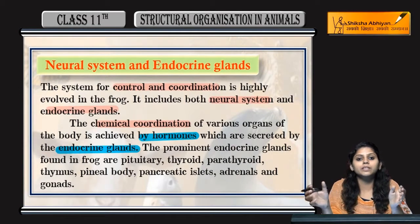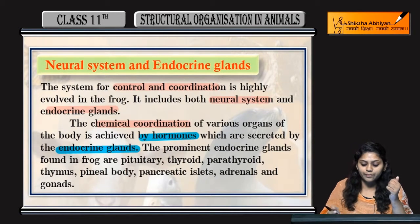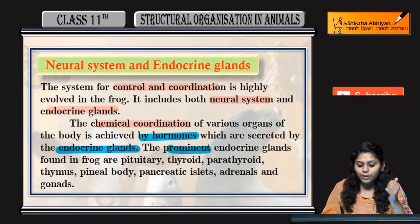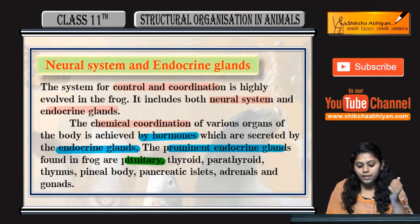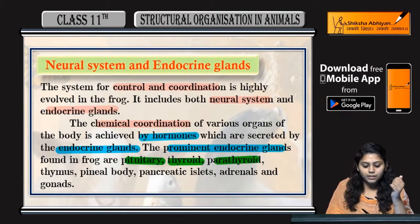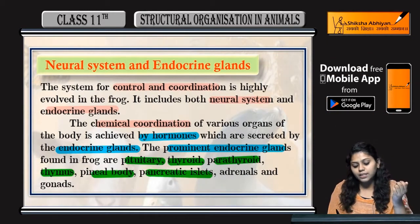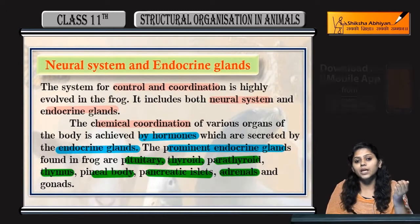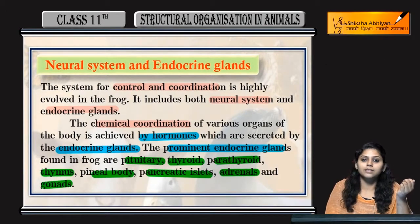Endocrine glands secrete करते हैं hormones जो help करते हैं coordination and control में. Prominent endocrine glands हैं frog के — pituitary, thyroid, parathyroid, thymus, pineal body, pancreatic islets, adrenals and gonads.